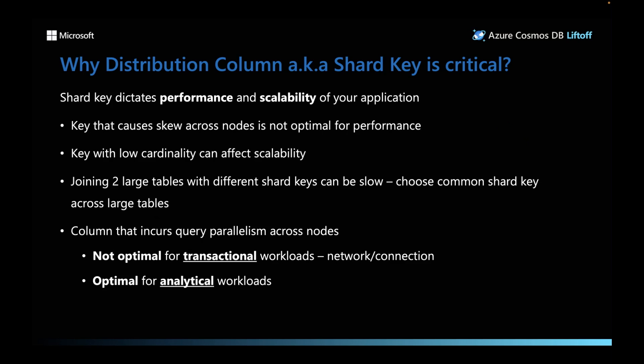Suppose you pick a column with a cardinality of two — say a boolean column — you can scale only up to two nodes because the cardinality is two. You want to pick a column with higher cardinality, ideally in the thousands. You also want to pick a key that optimizes joins in your queries. Joining two tables with different shard keys can be slow, so you want to choose a common shard key across large tables.